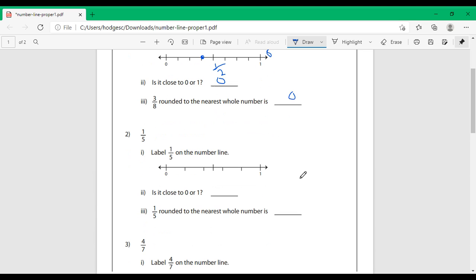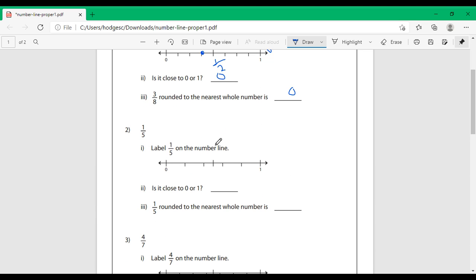Next example, 1 fifth. We draw a number line and divide it into 5 segments. You have 0, 1 fifth, 2 fifths, 3 fifths, 4 fifths, and 5 fifths is equal to 1.